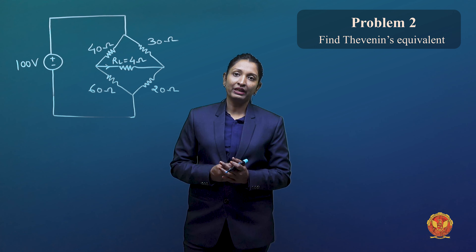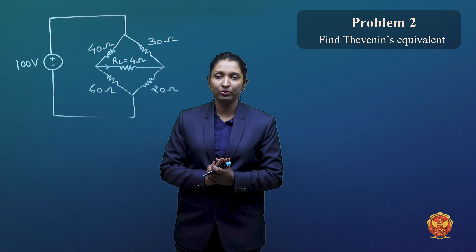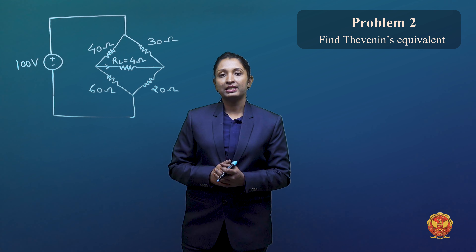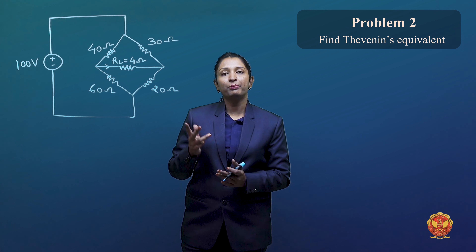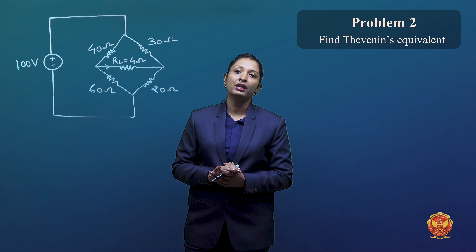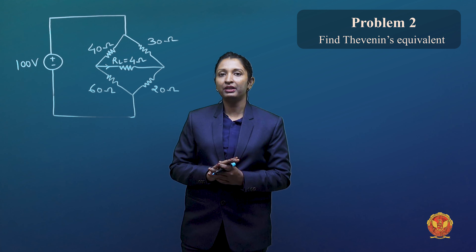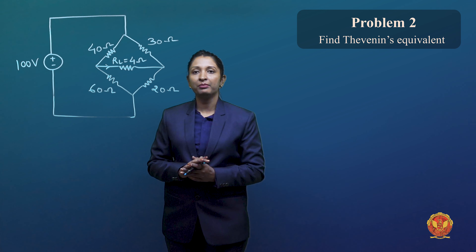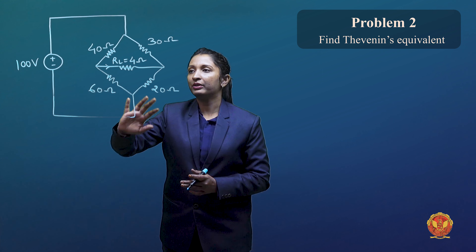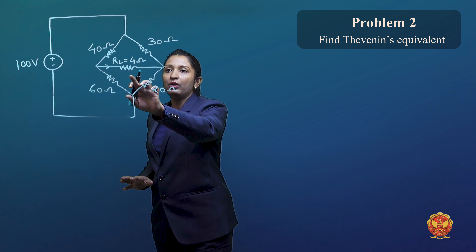The first type will be connected to independent sources. The second case will involve both sources. We have to find out the Thevenin's equivalent for this circuit. This is our load of 4 ohms.